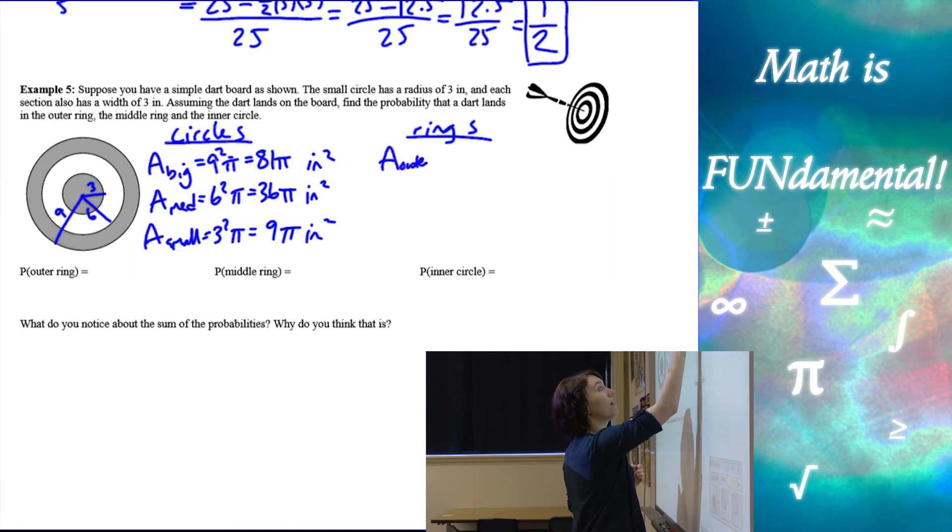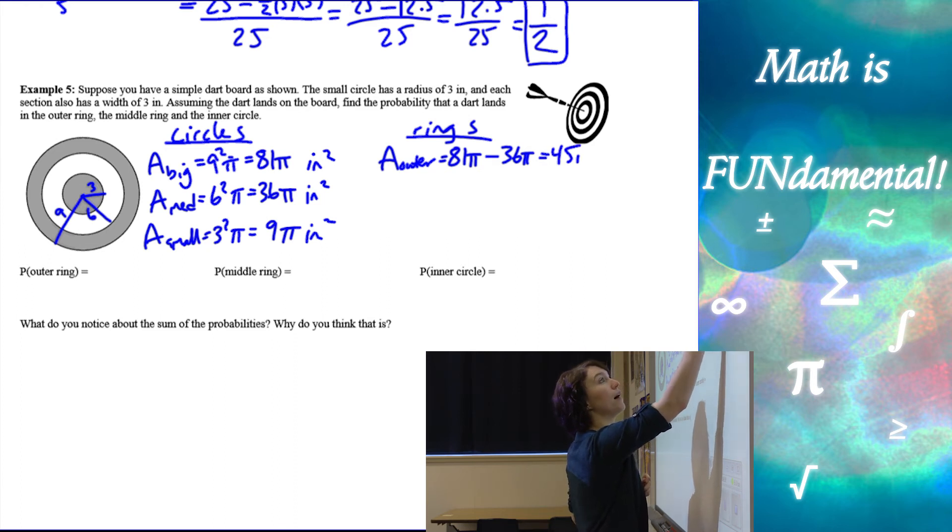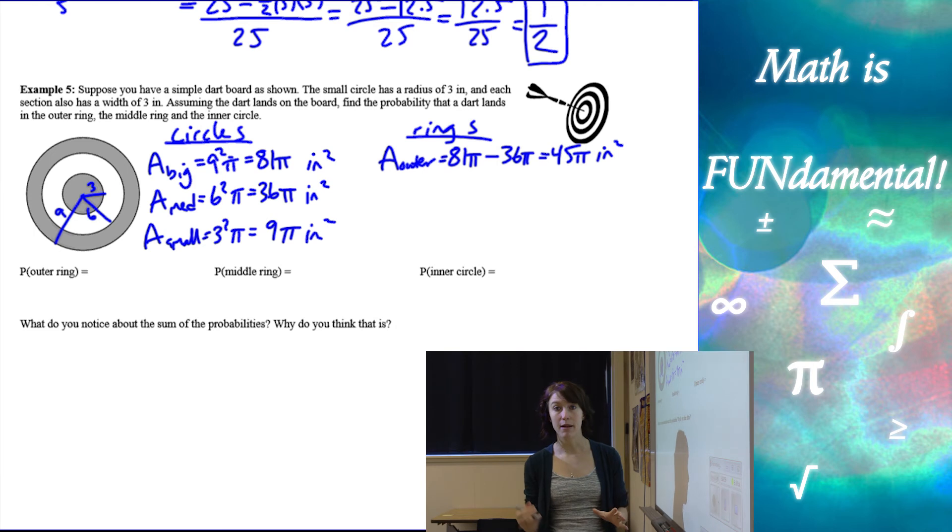So area of the outer ring is going to be 81 pi minus 36 pi. And then simplifying that, we get 45 pi inches squared. So there is the area of my outer ring.